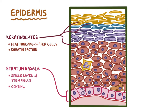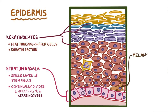Basal cells continually divide and produce new keratinocytes. The stratum basale also contains another group of cells called melanocytes, which secrete melanin — a pigment protein, or coloring substance.